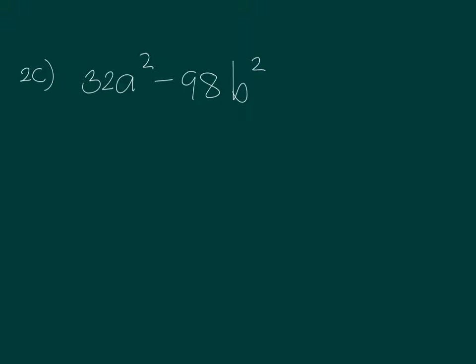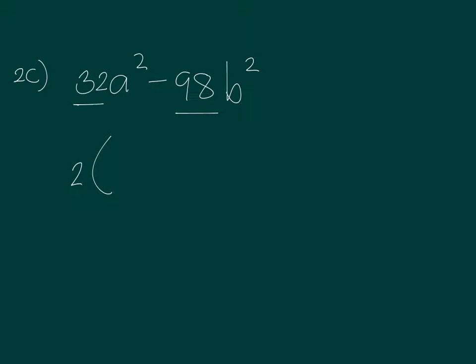First I see that 32 and 98 are both divisible by 2 because they're even numbers. So maybe I could divide by 2 or factor out 2 rather. So factor out 2, this will be 16A squared and then 98, half of 98 is equal to 49 and B squared.